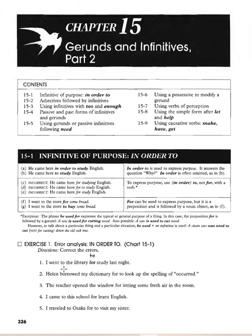Error analysis: 'I went to the library for study last night' — incorrect. It should be 'I went to the library to study last night.' 'Helen borrowed my dictionary to look up the spelling of occurred.' You don't say 'for to.' 'The teacher opened the window to let in some fresh air' — not 'for letting.' 'I came to this school to learn English' — not 'for learn.' 'I travel to Osaka to visit my sister' — not 'for to visit.'